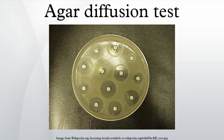The MIC is determined from the zero intercept of a linear regression fit through the data. The intercept itself is the logarithm of the MIC. The slope of the regression line is related to the diffusion coefficient of that particular antibiotic in the agar.